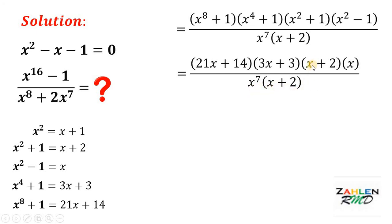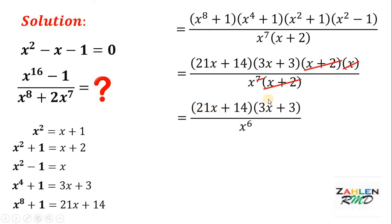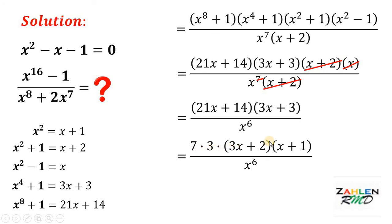We can cancel x plus 2 from numerator and denominator, and cancel one factor of x from numerator and denominator. This leaves 21x plus 14 multiplied by 3x plus 3, all over x raised to 6. On the numerator, we factor out 7 from the first factor and 3 from the second, giving 7 times 3 times 3x plus 2 times x plus 1. Now x plus 1 equals x squared, and 3x plus 2 equals x to the fourth power.